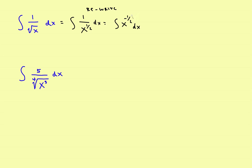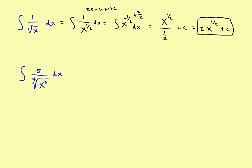Now apply the rule: add 1, so add 2 halves. Negative 1 half plus 2 halves gives x to the 1 half power, divided by 1 half, plus c. Take the denominator, turn it upside down, and that gives 2 times x to the 1 half power, plus c. This is a valid answer. Or if you want, you can write that as 2 times the square root of x, plus c. Either form is a correct answer.